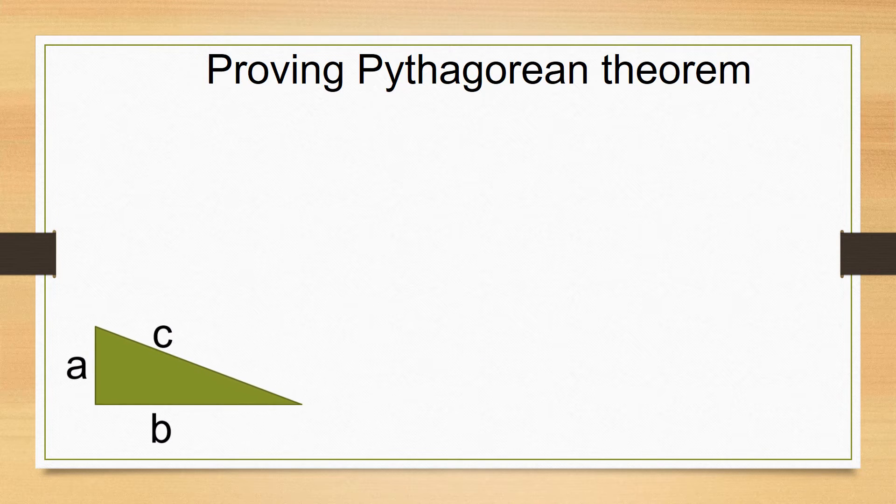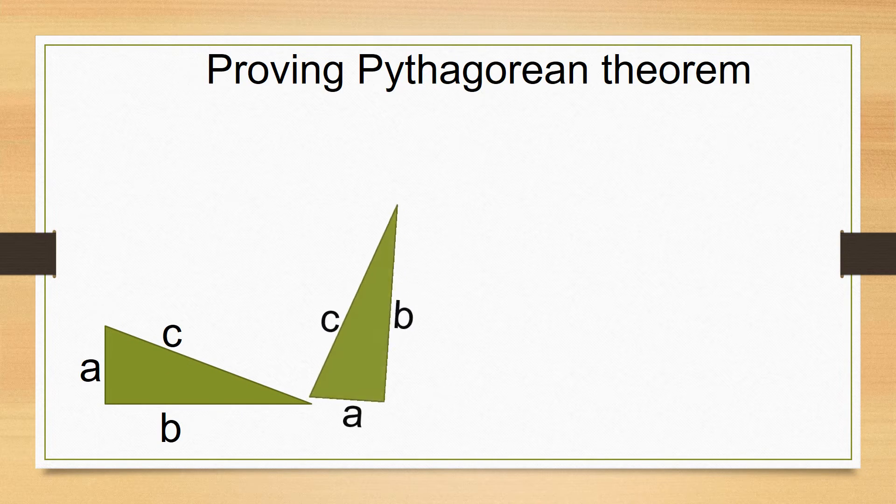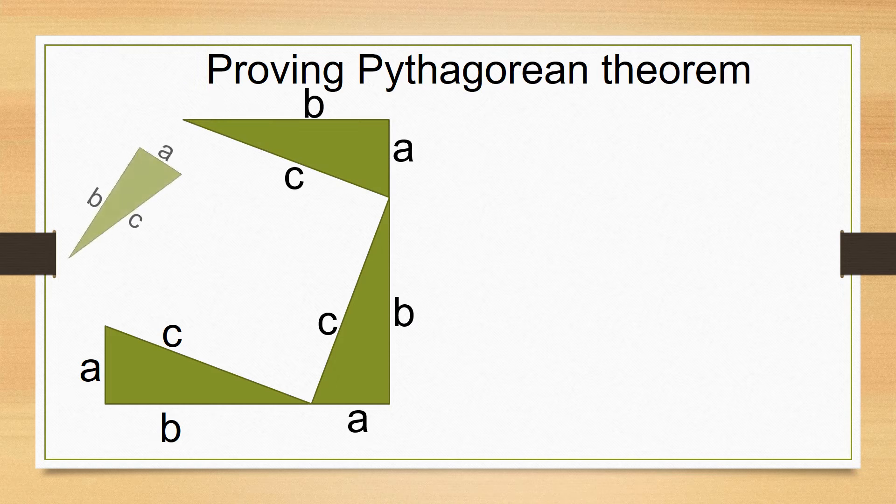One way to prove it would be geometrically. Make four copies of your triangle and arrange them in a square, like this.